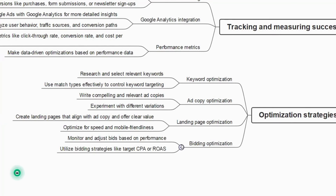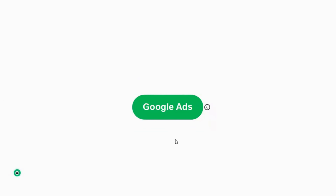The last optimization strategy is bidding optimization — monitor and adjust bids based on performance, and utilize bidding strategies like target CPA (cost per acquisition) and ROAS (return on ad spend). To acquire one customer, what is our cost? And ROAS means if you spent 7,000 rupees on an ad and generated close to 9,000 rupees, your return on ad spend is 2,000 rupees. This concludes the theoretical part of Google Ads; in upcoming videos we will learn it practically.